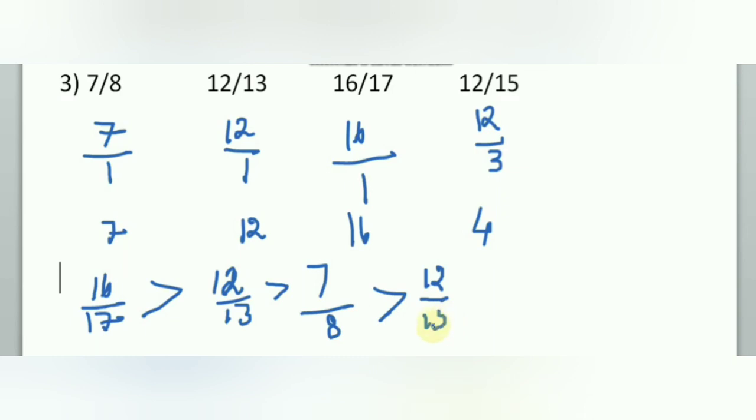The descending order is: 16/17 > 12/13 > 7/8 > 12/15.